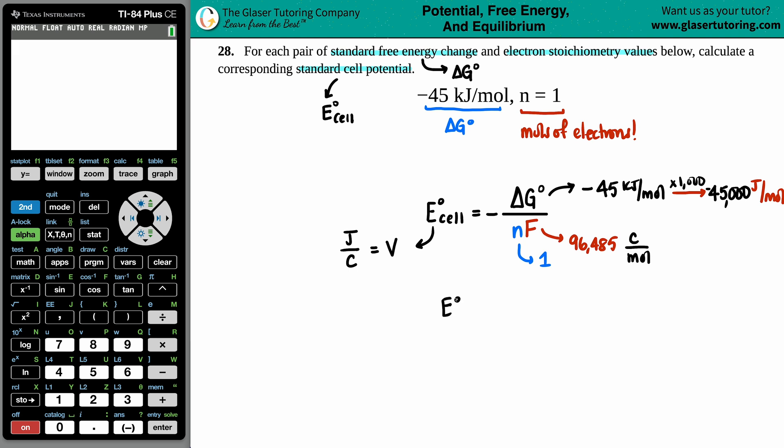All right, now let's plug it in. E cell equals negative - we got a fraction, one number on top, two numbers on the bottom. The top number is now negative, so we got two negatives going on over there. 45,000 divided by one times Faraday's constant. 96,485 divided by one is the same number, so you don't even have to plug that into the calculator, but if you want to, go right ahead.